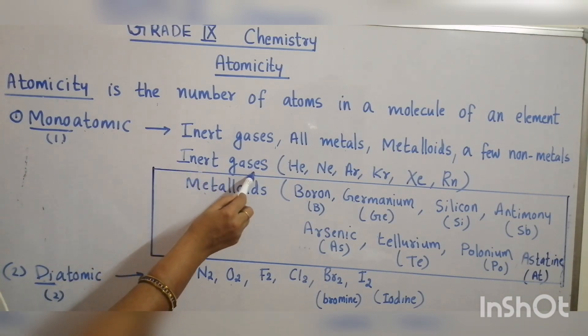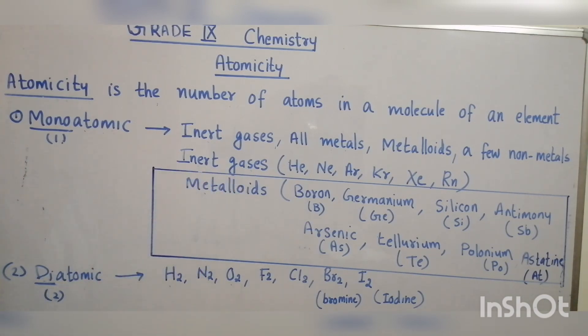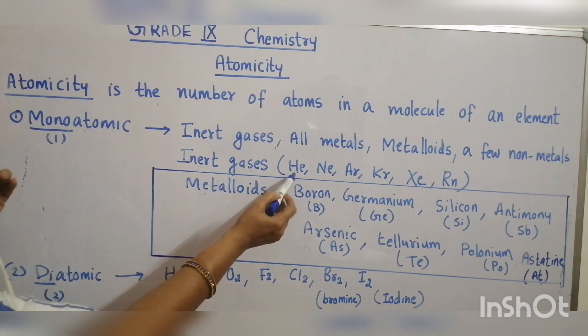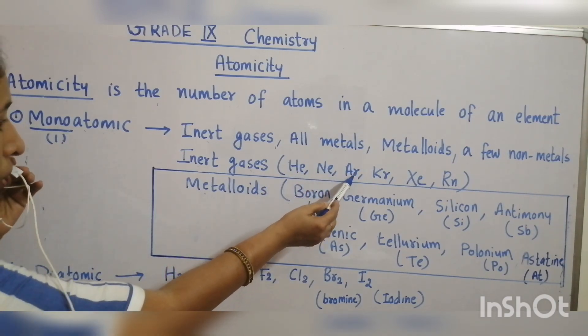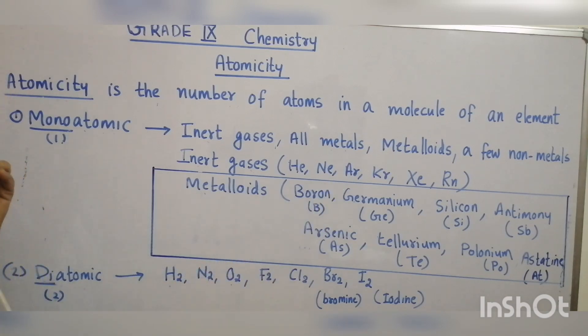Inert gases are also called noble gases. They are helium, neon, argon, krypton, xenon, and radon.